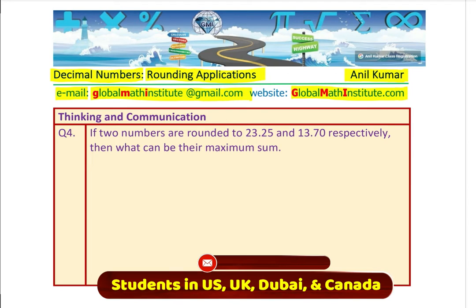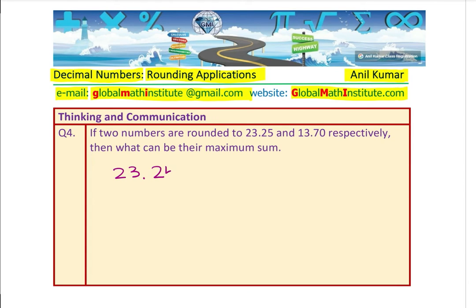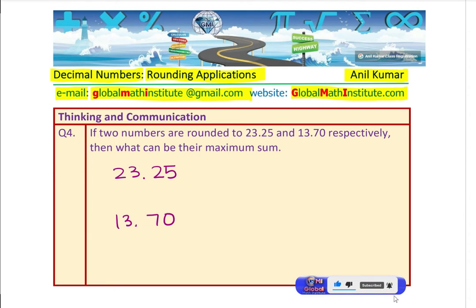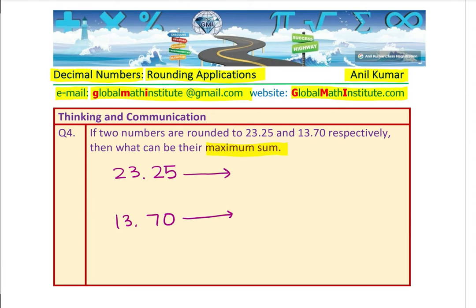Now let us see how do we solve such a problem. We are looking at two numbers which are 23.25, rounded to the 100th place, and 13.70. If two numbers are rounded to these values, these are the rounded numbers. Then what can be the maximum sum? You have to see what number could be rounded to this. We are looking for maximum sum, which means both of them should be maximum.